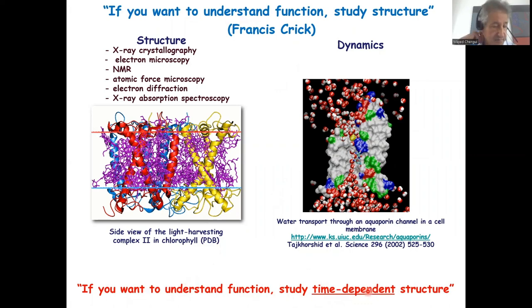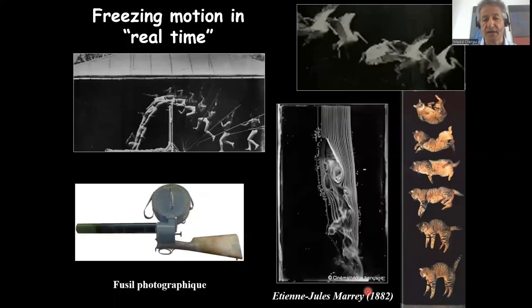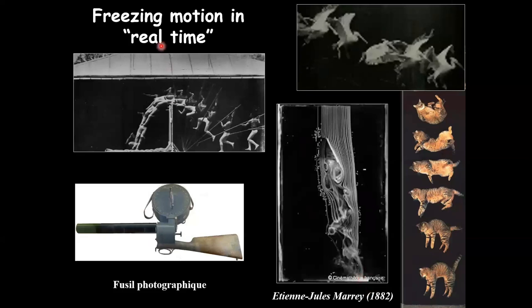Now this issue of time-dependent structure is an old problem in science. Back at the end of the 19th century there was a French physiologist and anatomist Etienne Jules Marais who was interested in animal motion. He developed a device called the shutter camera, which he called the photographic gun, the fusil photographic. I guess this is where the expression to shoot a film comes from.